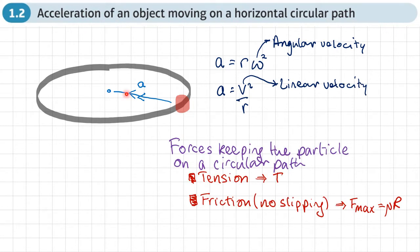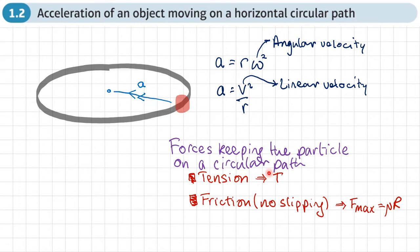There may be forces keeping this particle on the circular path and stopping it from flying out. That could be tension, if there's a string or rope attached, and that would act towards the center in the same direction as the acceleration. Or it could be friction, where we have no slipping, meaning the maximum frictional force acts towards the center, equal to mu R. If we've got either one of these forces, we can use F equals MA.